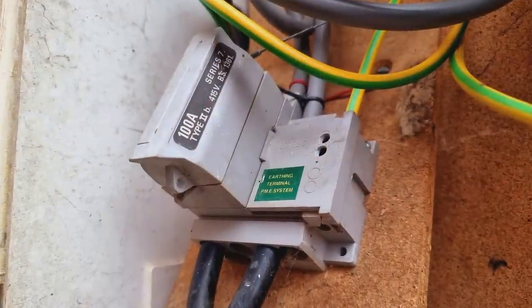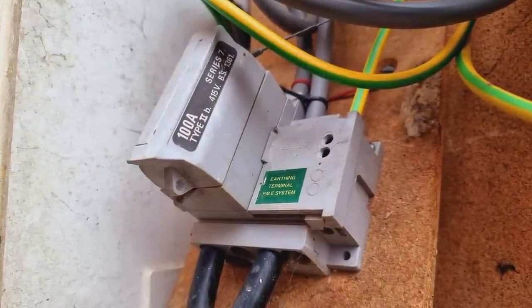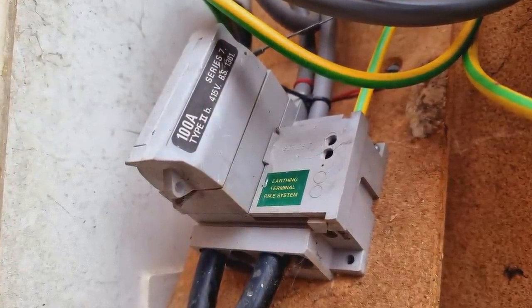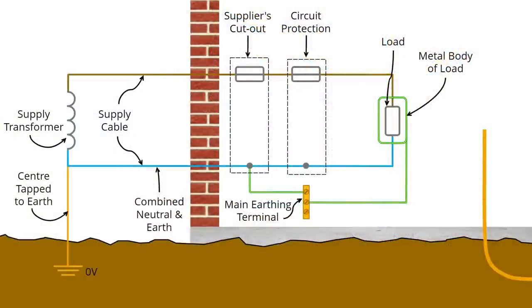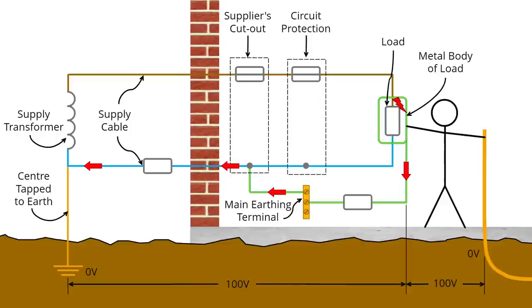The reason for bonding extraneous conductive parts is to ensure that there are no differences in potential between them under fault conditions. So if you imagine the incoming services in a typical house — let's say you have a TN electrical system which has an earthing arrangement provided by the DNO — then you have an incoming water pipe and gas pipe which are both metal. The metal pipes that come out of the ground will have the ability to introduce an earth potential, so we bond them back to the main earthing terminal to maintain exposed and extraneous conductive parts at substantially the same potential.